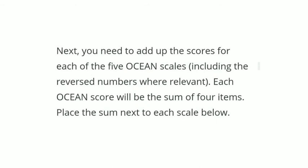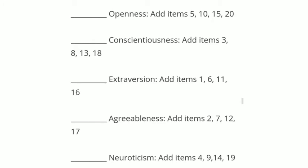Once you have finished the reverse scoring and have new answers, keep them as they are. Next, add up the scores for each of the five OCEAN scales — each OCEAN score will be the sum of four items. For Openness to Experience, add the scores for statements 5, 10, 15, and 20. Remember to use the reversed scores for statements that were reversed.